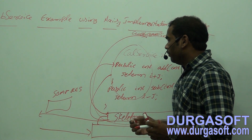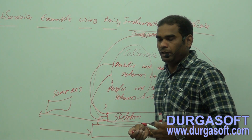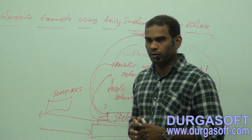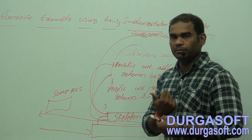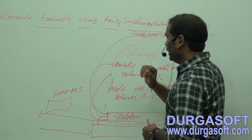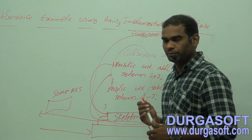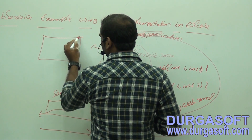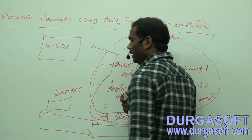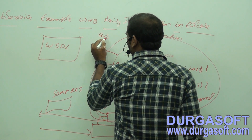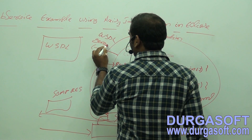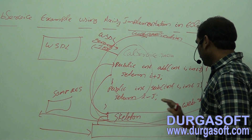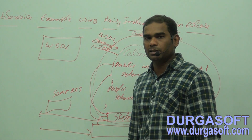Now, assuming we are not using any IDE tool, the steps we need to follow are: create a web application, create the service class inside it, compile the service class, then generate the WSDL file using a WSDL generation tool, and configure the skeleton inside the web application.